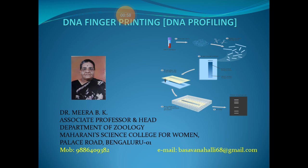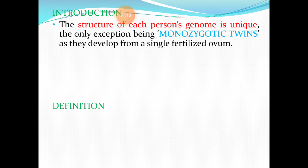You can see the schematic representation of DNA fingerprinting or DNA profiling which I am going to teach in detail in the next few minutes. Now, the structure of each person's genome is unique — each one of us has a genetic makeup that is unique to us. You don't find any two persons with the same genome, the only exception being monozygotic twins.